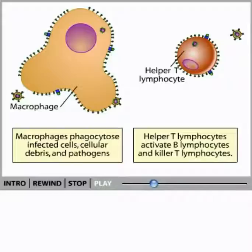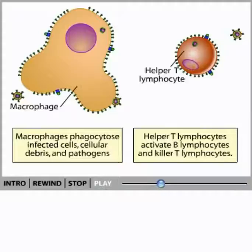When HIV infects helper T lymphocytes, the immune system loses an essential activator. Helper T lymphocytes are required to activate B lymphocytes, which produce antibodies, and killer T lymphocytes, which kill virally infected cells of the body. Without healthy helper T lymphocytes, the B lymphocytes and killer T lymphocytes cannot fight infections.